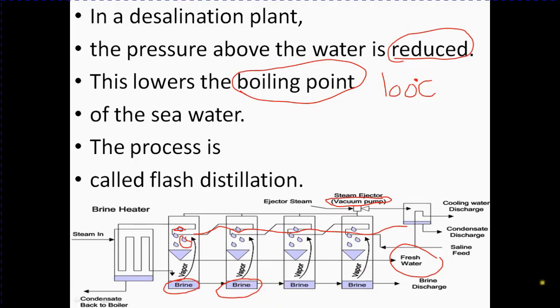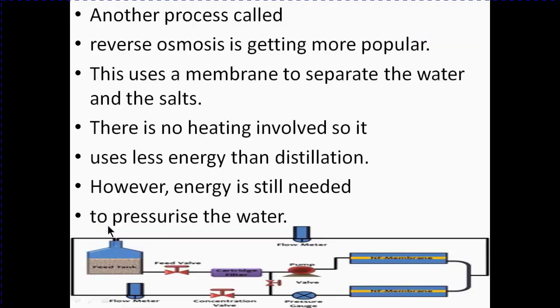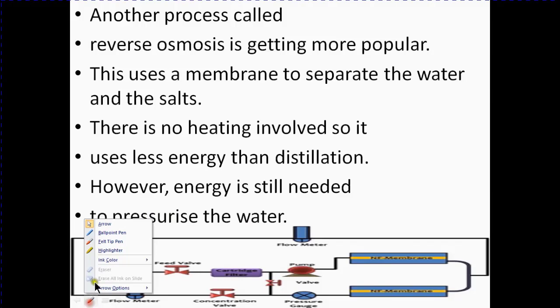The next slide, let's see. Another process called reverse osmosis is getting more popular. This uses a membrane to separate the water and the salt. Here in this process, reverse osmosis, we use a membrane. There is no heating involved, so it uses less energy than distillation. However, energy is still needed to pressurize the water.